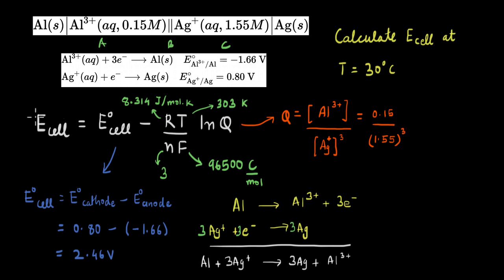Now all that is left to calculate this value of E cell, is to plug in all these values. The standard cell potential, which is 2.46 volts, R, T, N, F, and this Q.